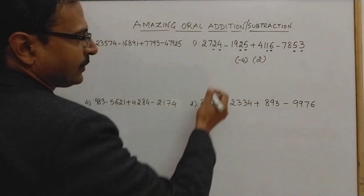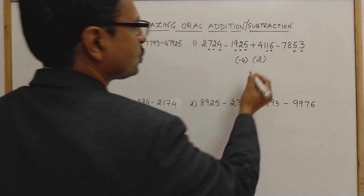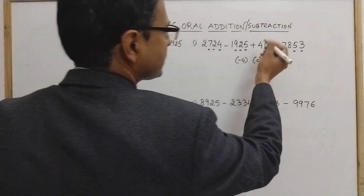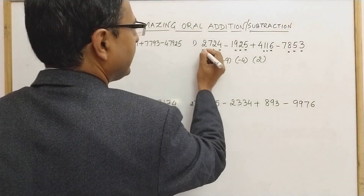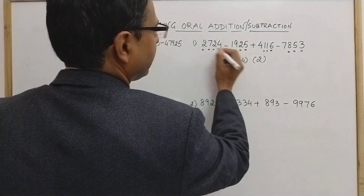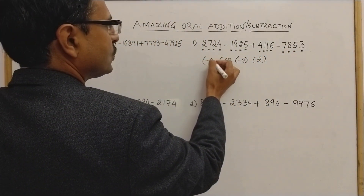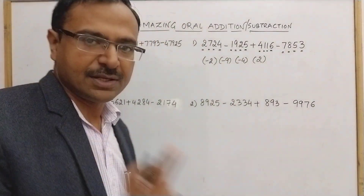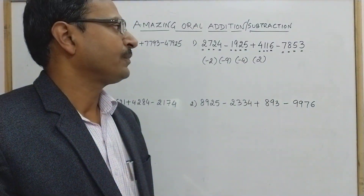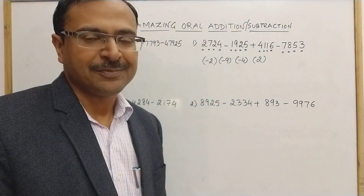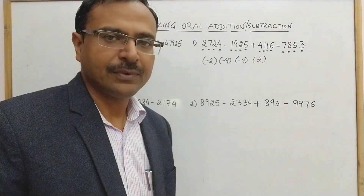The third digit: 7 minus 9 is minus 2, plus 1, minus 2 plus 1 is minus 1, and minus 8, giving minus 9. Finally, 2 minus 1 is 1, plus 4 is 5, and 5 minus 7 is minus 2. The last digit is negative, which hints that the final answer will be negative — this is your checkpoint. Now let's carry forward with the method.